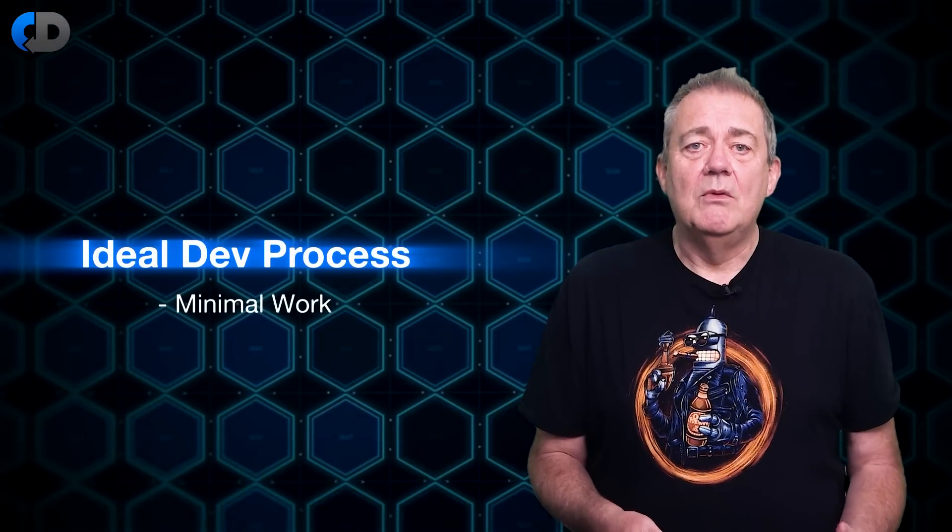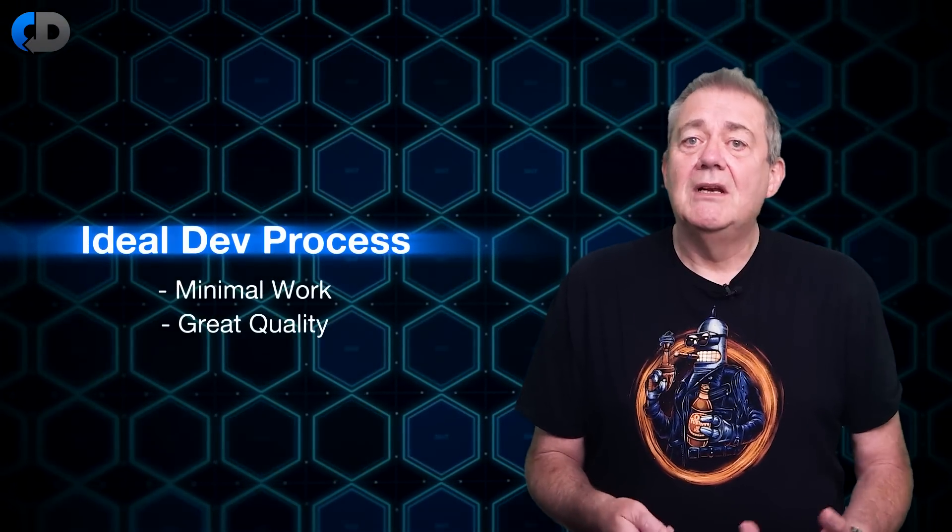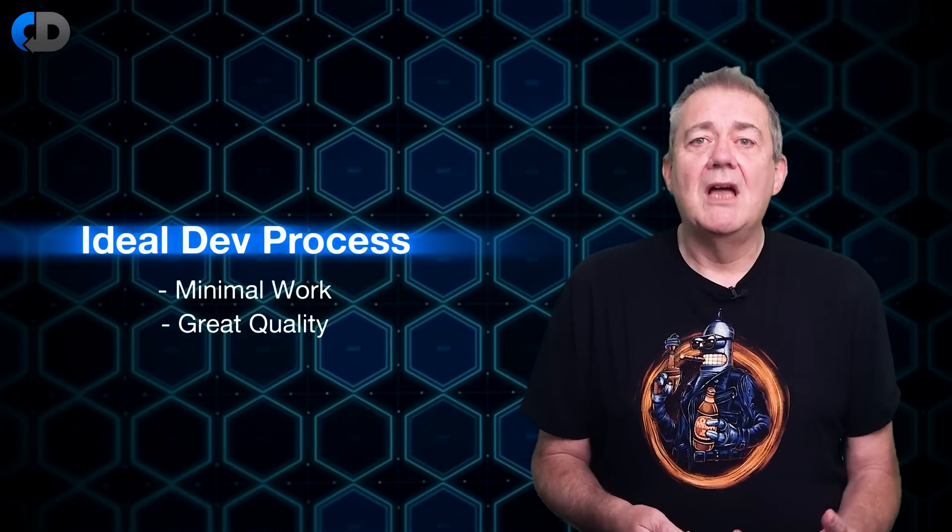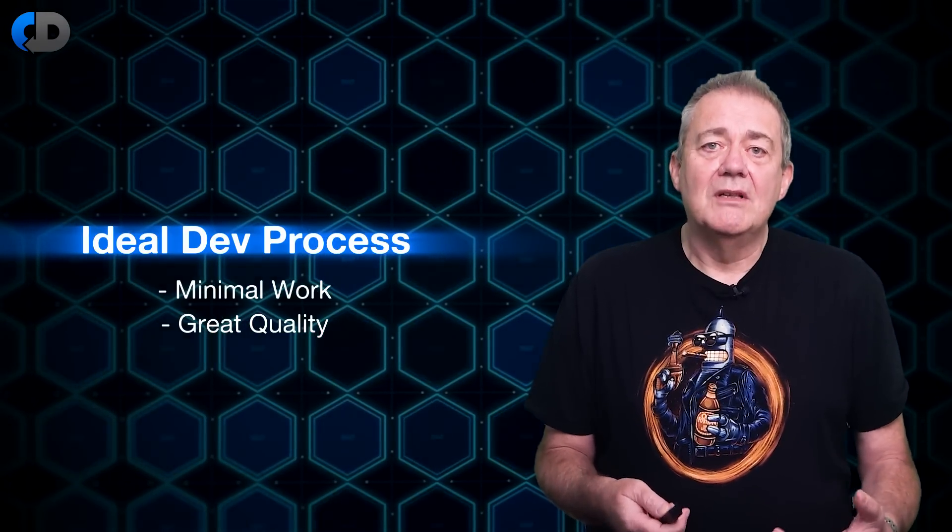If our development process is to be ideal then we'd certainly want great quality too and we'd like to achieve all of this with the minimum amount of work. There's going to be work sure but we'd like the work to be only what's absolutely essential to the delivery of our great quality software. So what if in our ideal development process these were the only things that we worked on? Requirements, code and tests. I suppose it may depend on what we mean by all three but let's start there.